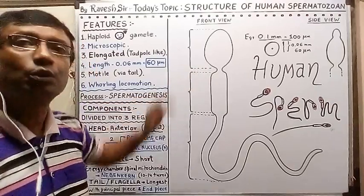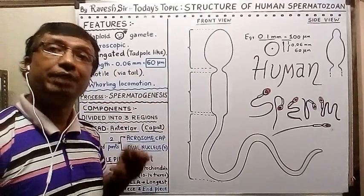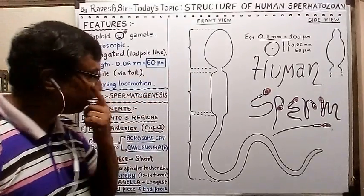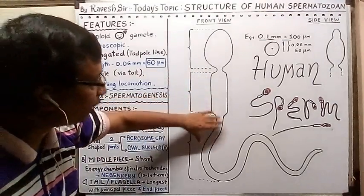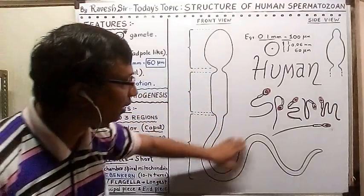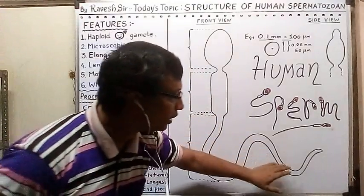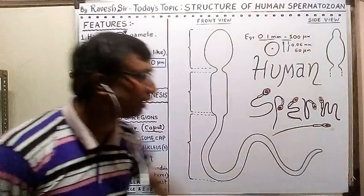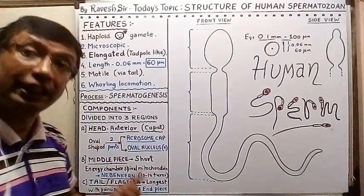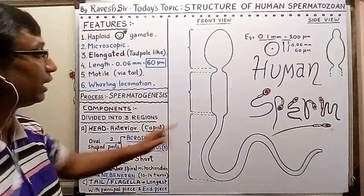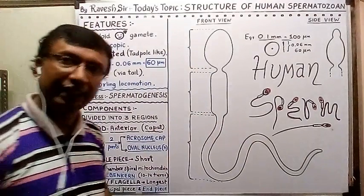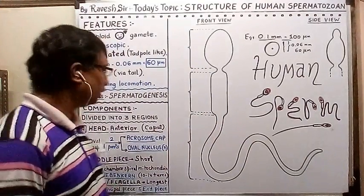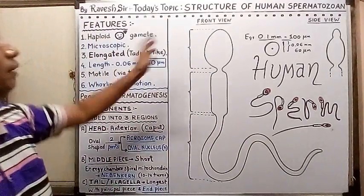The head continues into a narrow middle piece, and then the middle piece continues into the longest and narrowest part, which is the tail — the flagellum.